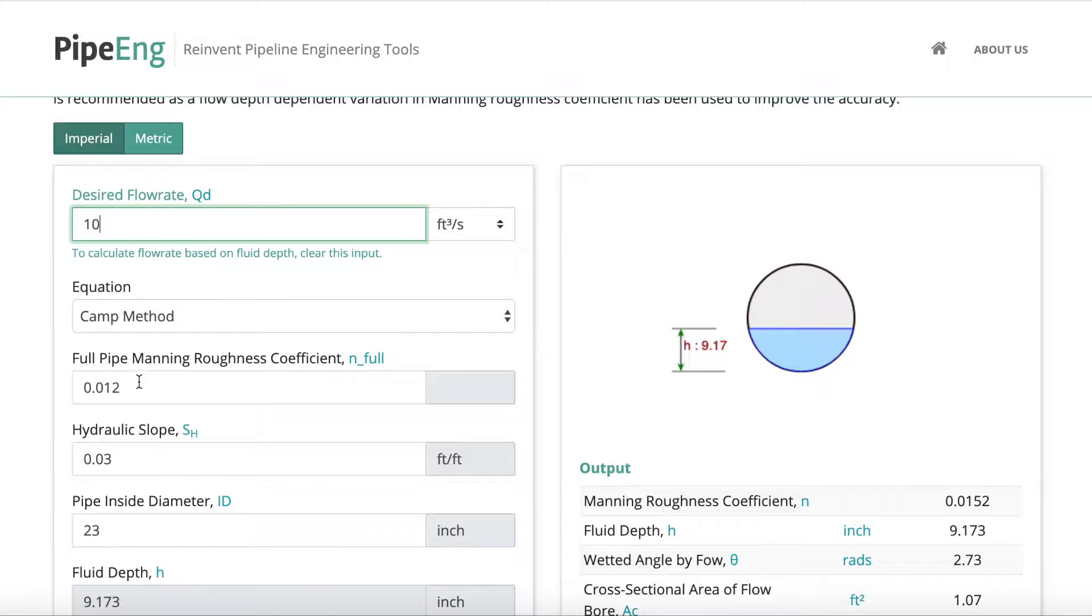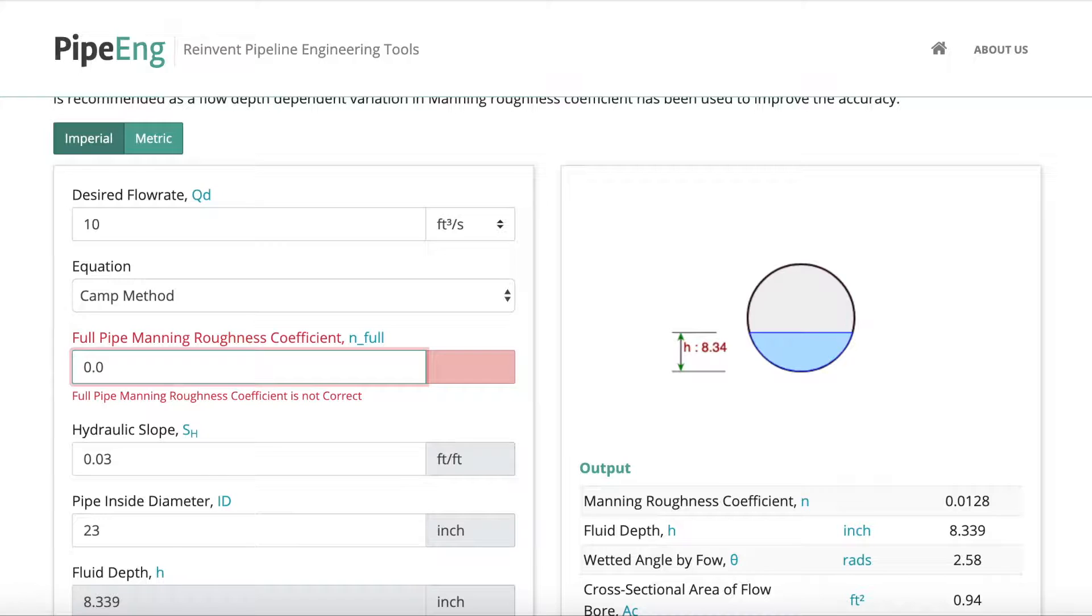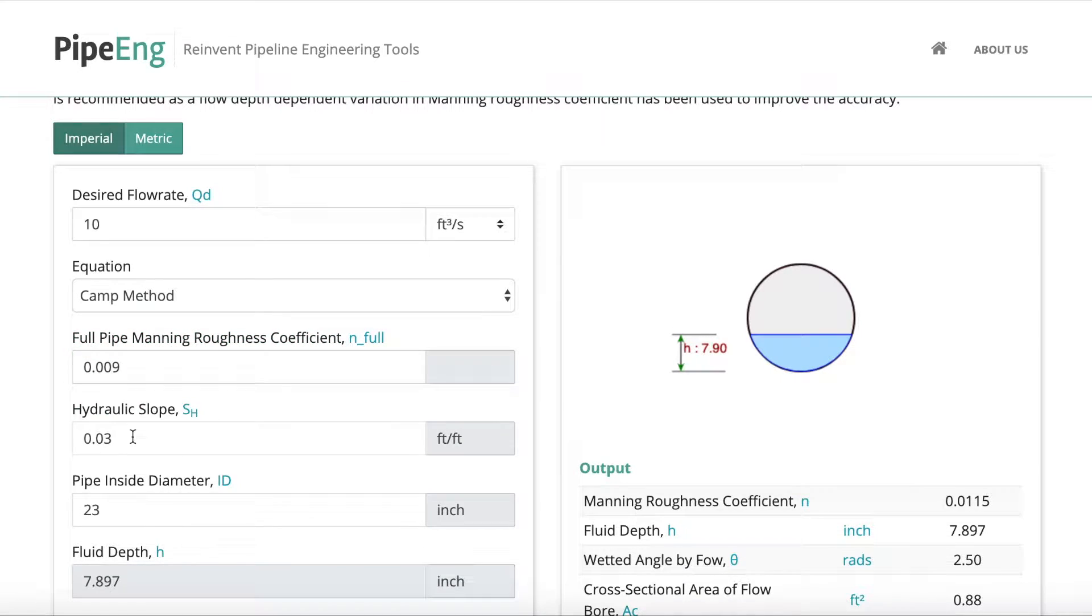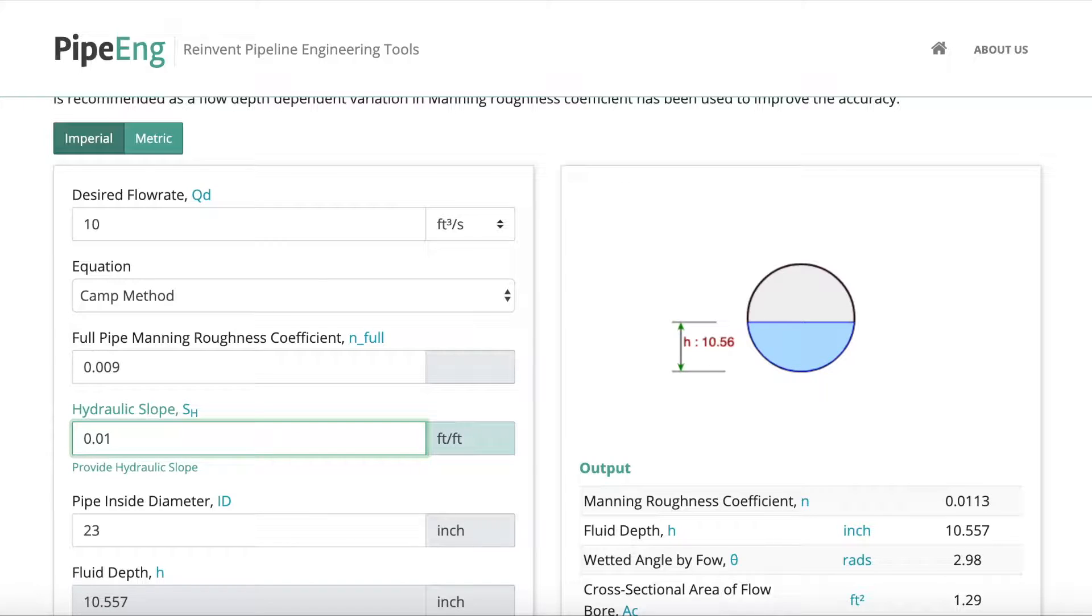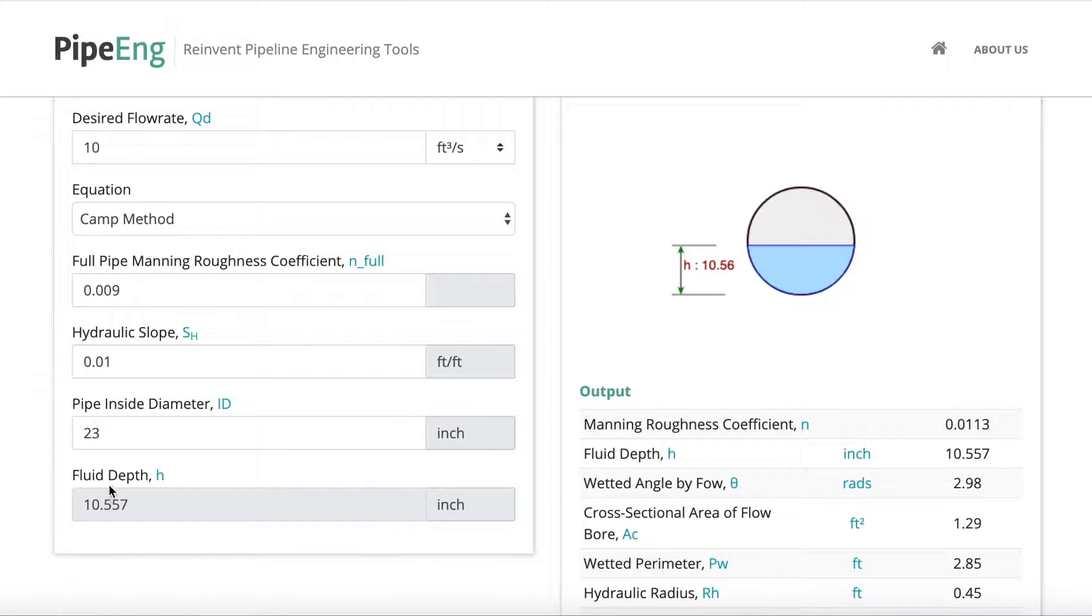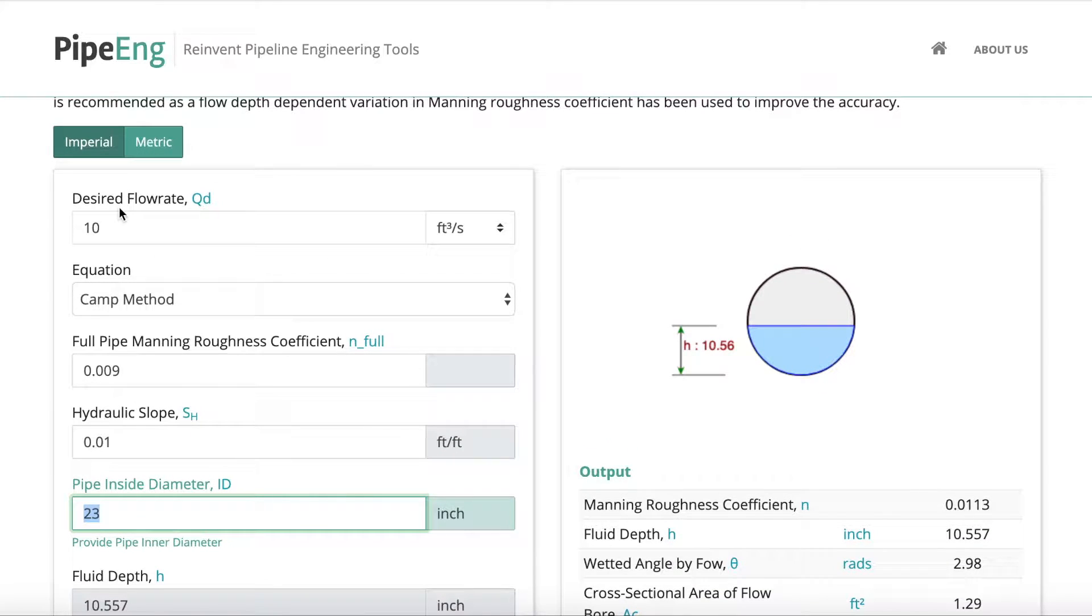You still keep the Camp method. It's a steel pipe, let's say it's a PE pipe. Let's change it to, let's say, this is a PE pipe and the slope available is only one percent. Okay, and then what you can do is to change the pipe internal diameter...